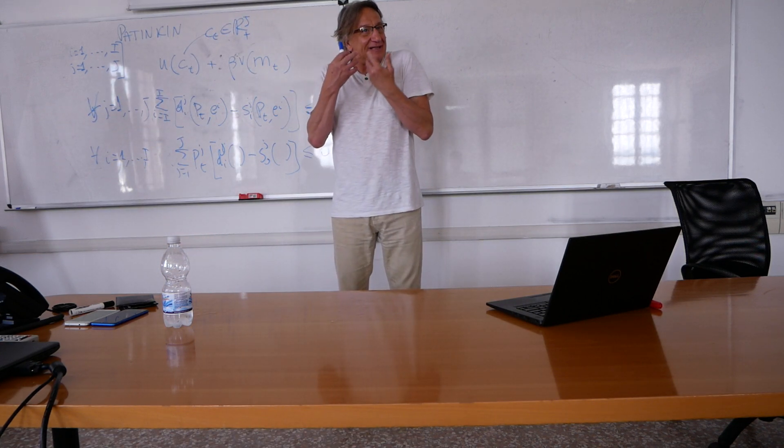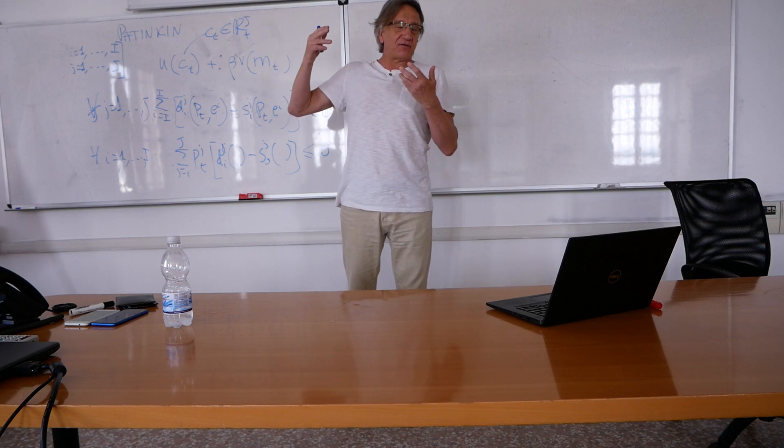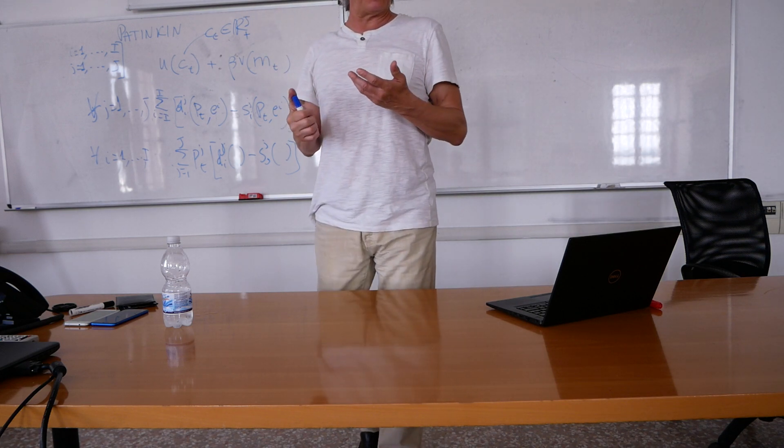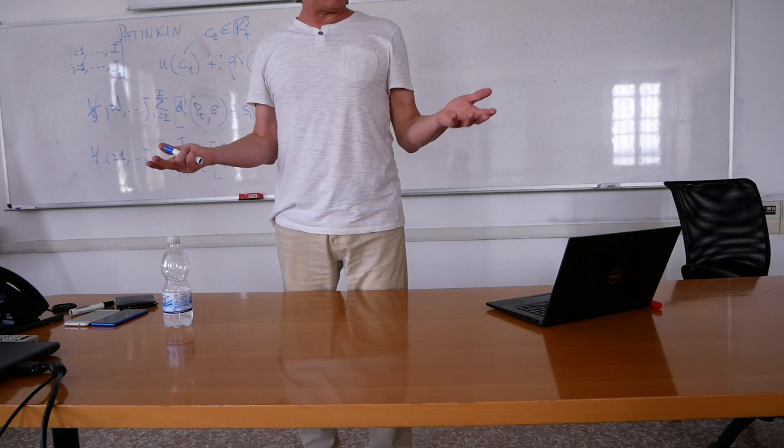So basically when all this stuff comes in, the people that have it, typically merchants and people with economic interest in Latin America start spending it and given that the output of the stuff they want to buy is what it is, may go up a bit, but not much, most of this silver turns into increasing the relative price of the goods with respect to silver.